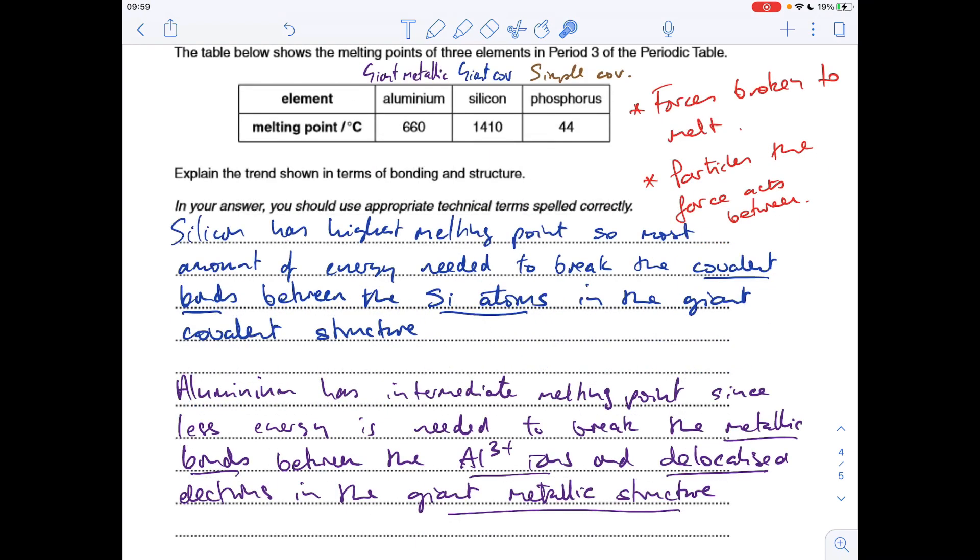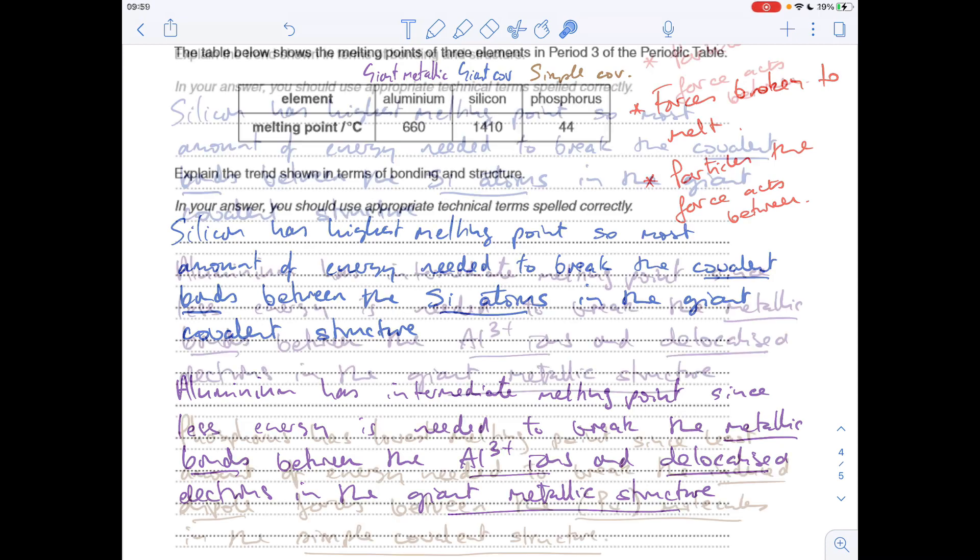So moving on to aluminium, I'm just saying it's got the intermediate melting point. Less energy is needed, obviously, than the silicon to break the metallic bonds, so they're the forces that are broken, between the aluminium three plus ions and the delocalised electrons, the particles, in the giant metallic structure.